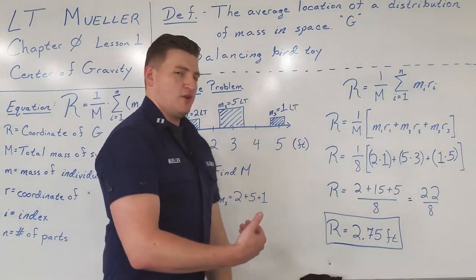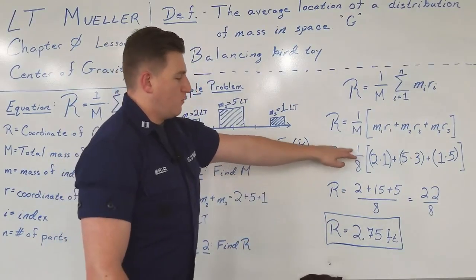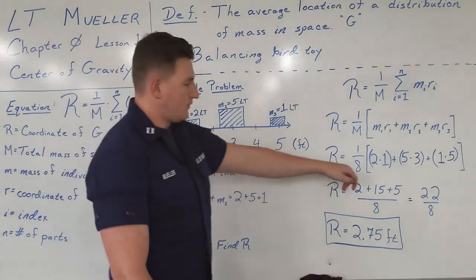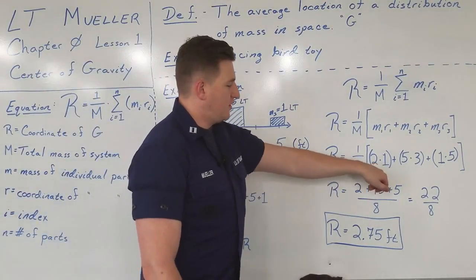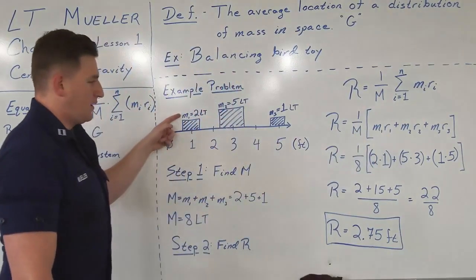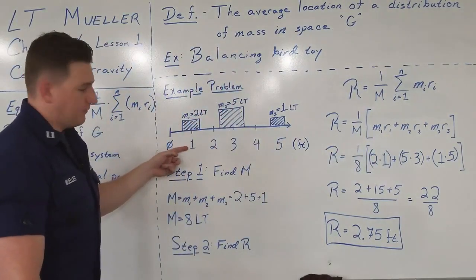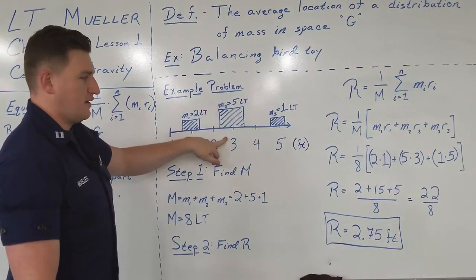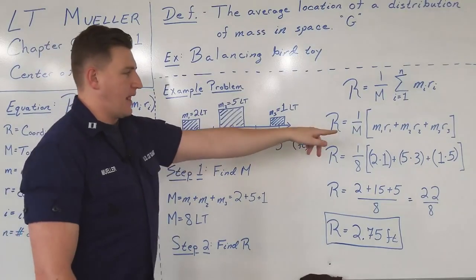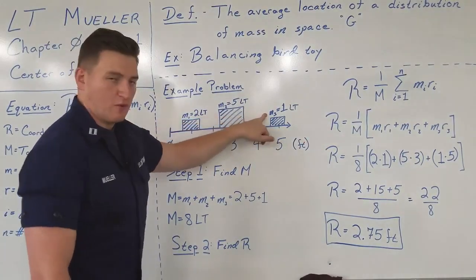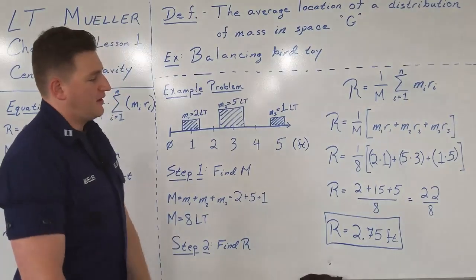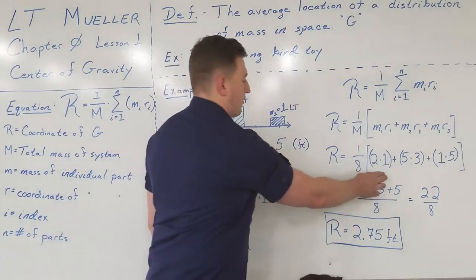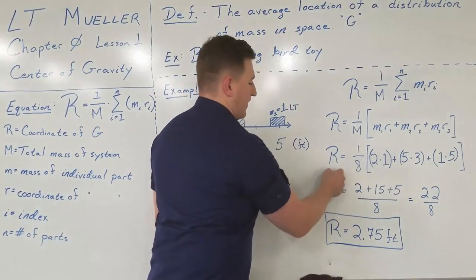Now let's plug in everything that we know and try and find R. R equals one over capital M, which we've already found out is eight long tons, times the summation, two times one, two is M1, R1 is one foot, then five times three, M2 is five long tons, R2 is three feet, and then M3, R3, M3 being one long ton, and R3 being five feet. Now we just take within the parentheses, multiply together, multiply each expression, then add them all together and divide by the total mass of the system.